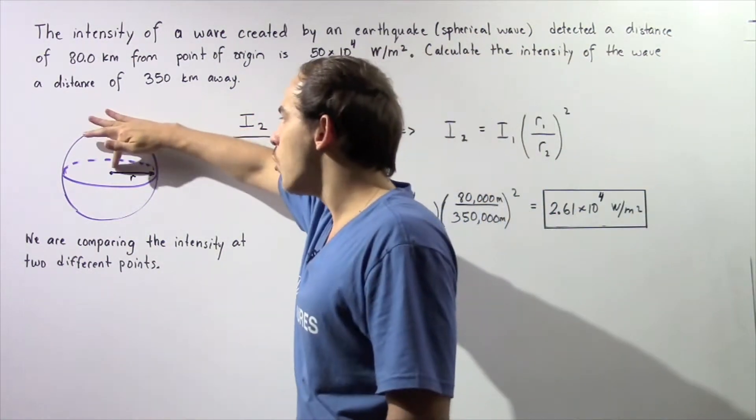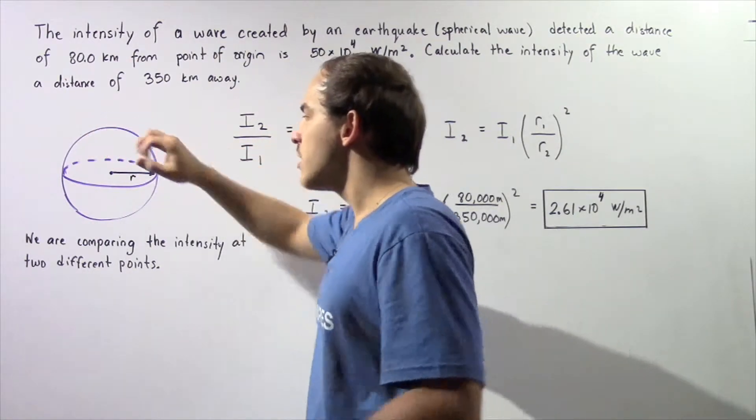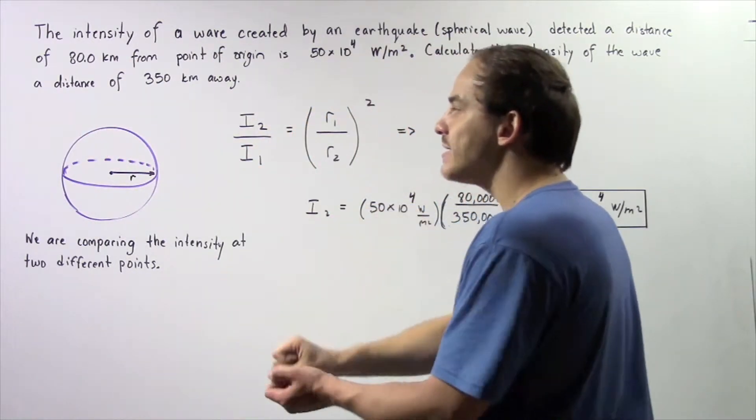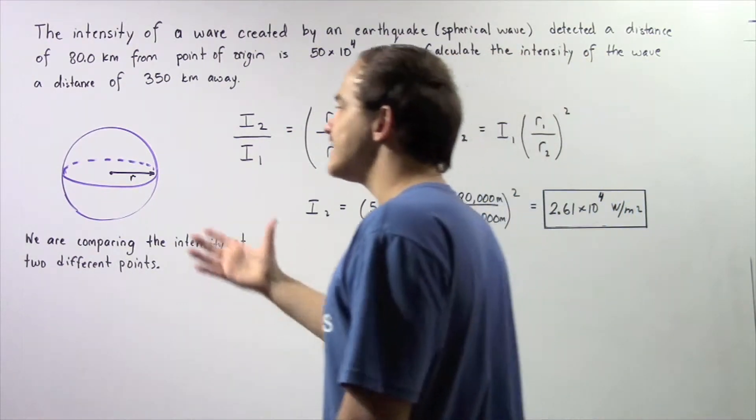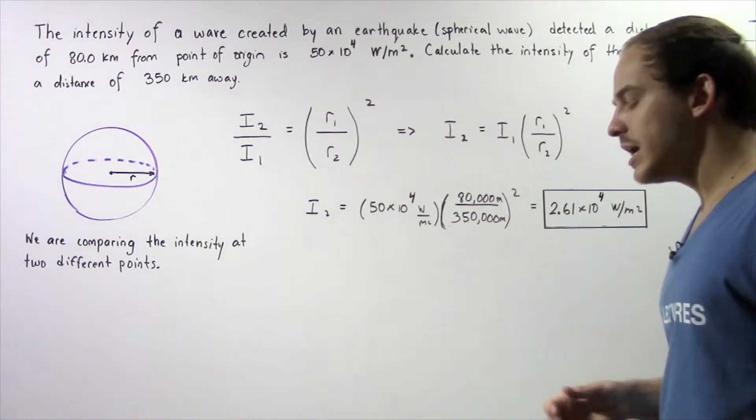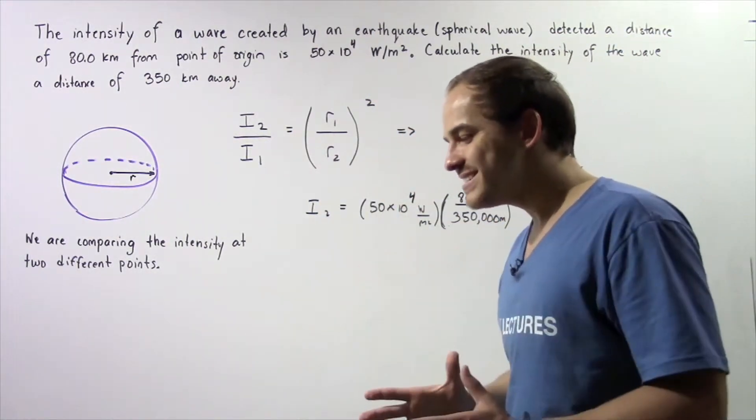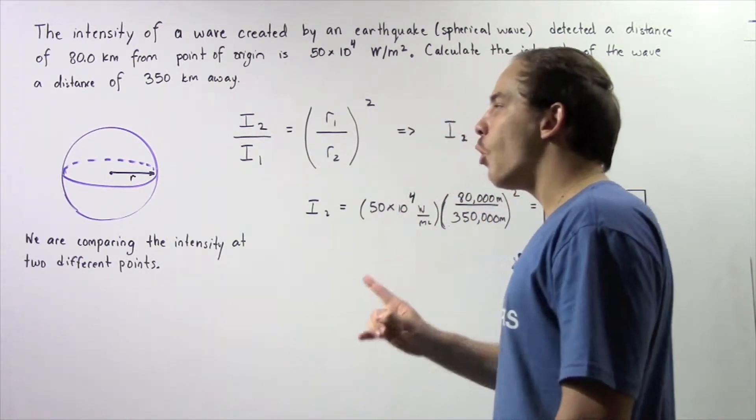So let's suppose this point is the point of origin of our spherical wave. The wave is created and it propagates outward in all possible directions forming a sphere. Now, we want to compare the intensity of our wave at point 1 and point 2.